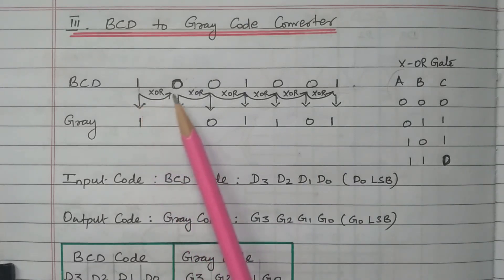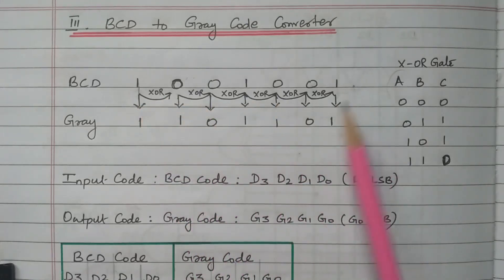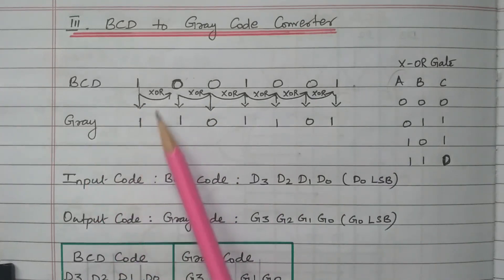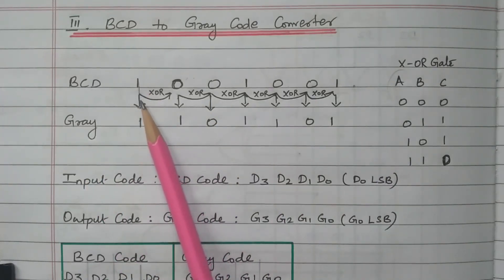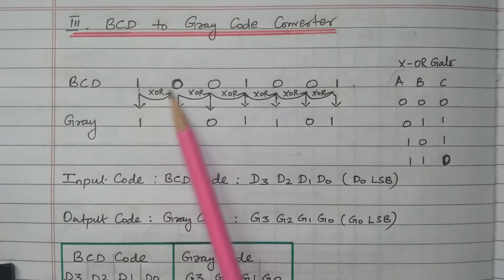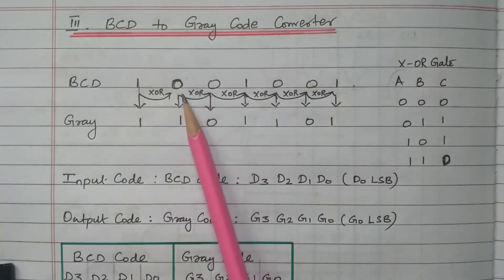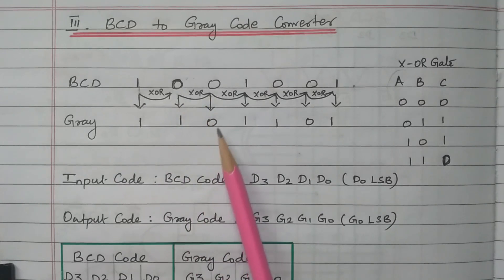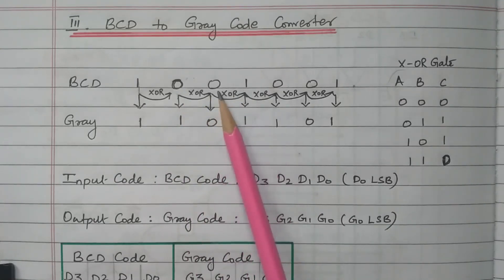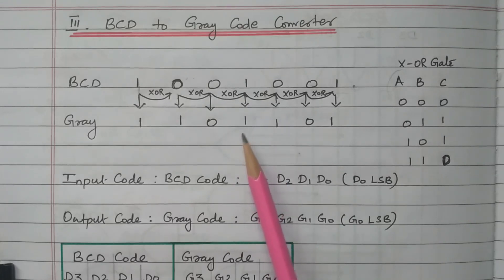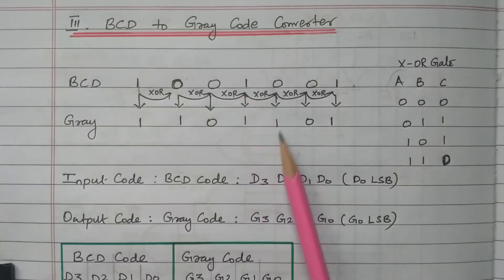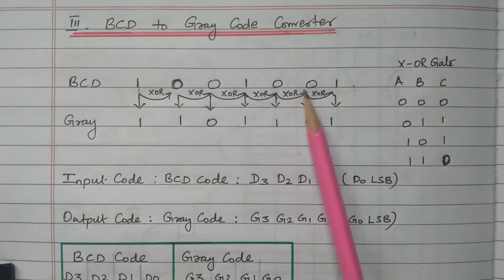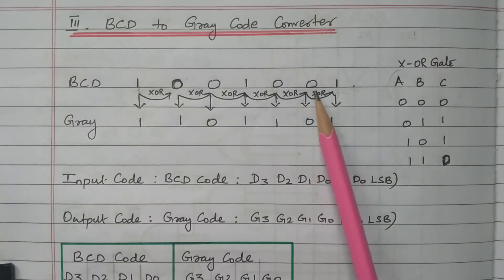The BCD code is 1 0 0 1 0 0 1. The first digit 1 is written as it is for the gray code. Then XOR of 1 and 0: both are different, so the output is 1. Then XOR of 0 and 0: both are equal, so the output is 0. Then 0 and 1: inputs are different, output is 1. Then 1 and 0: inputs are different, output is 1. Then 0 and 0: inputs are equal, output is 0. Then 0 and 1: inputs are different, output is 1.